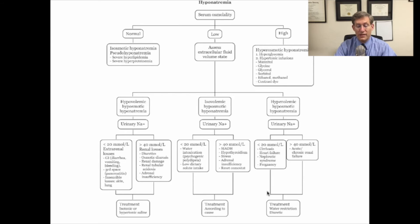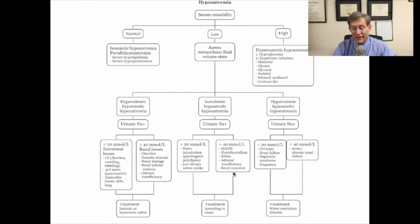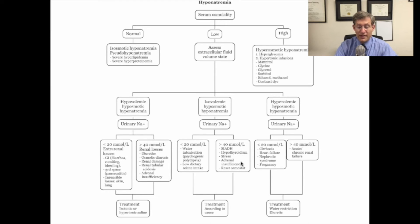This additional slide shows a very similar approach. Start by checking serum osmolality. If it's low, as it is most of the time, check your extracellular fluid volume state. One thing highlighted here is focusing on the urine osmolality. If the patient has a low urine osmolality, the concern is water intoxication. If there is an elevated urine osmolality — meaning the urine is more concentrated than it should be — that points toward SIADH, hypothyroidism, and adrenal insufficiency.